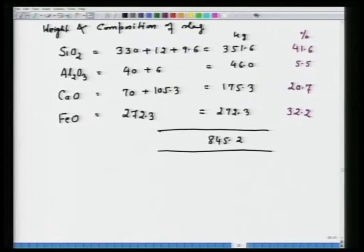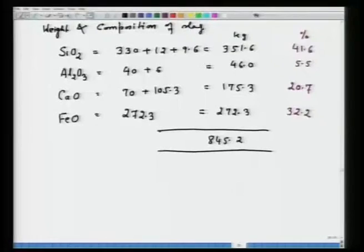Total slag = 845.2 kg. Composition: SiO₂ = 41.6%, Al₂O₃ = 5.5%, CaO = 20.7%, FeO = 32.2%. The basicity (CaO/SiO₂) is less than 1, meaning the slag is acidic. However, a basic slag is not needed here since no refining reactions are occurring, so an acidic slag is acceptable.